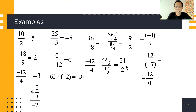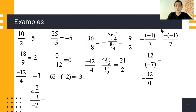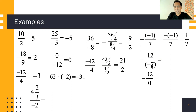Next: negative of negative 1 over 7. We multiply negative by negative 1 — negative times negative is positive — so the answer is positive 1 over 7. Next: negative 2 of 12 over negative 7.